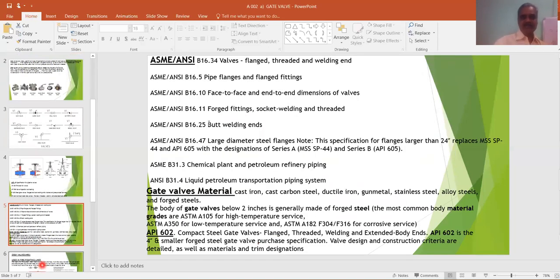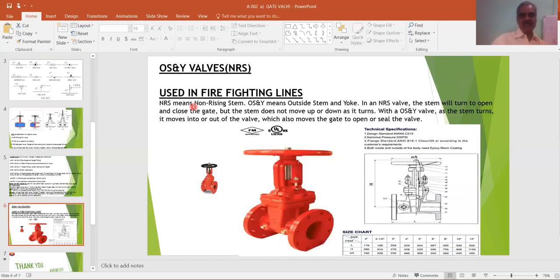Now these are the applicable codes as we discussed just now. See this is OS&Y valves used in firefighting lines. NRS means non-rising stem, OS&Y means outside stem and yoke. This valve is normally used in firefighting system.